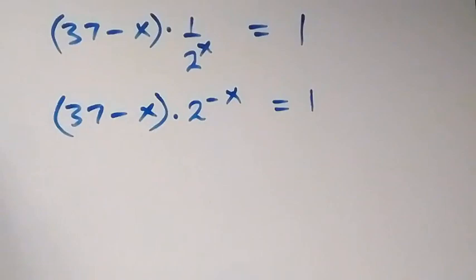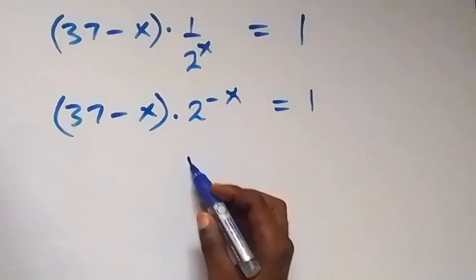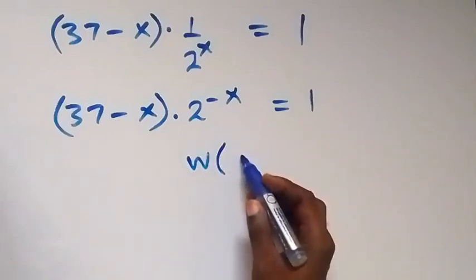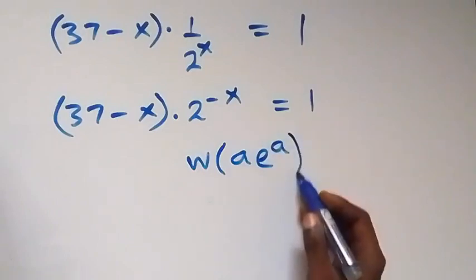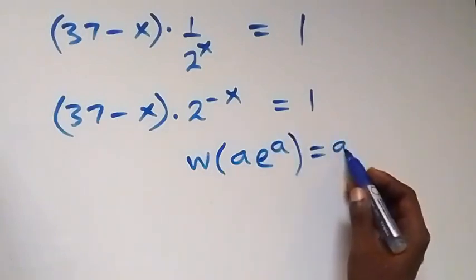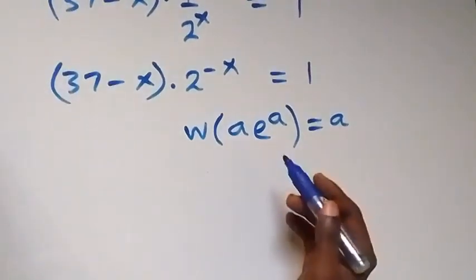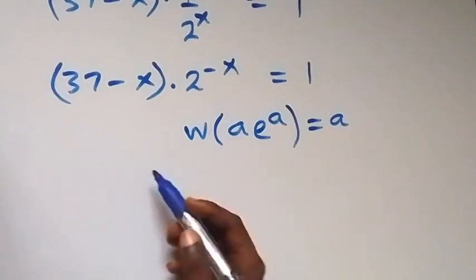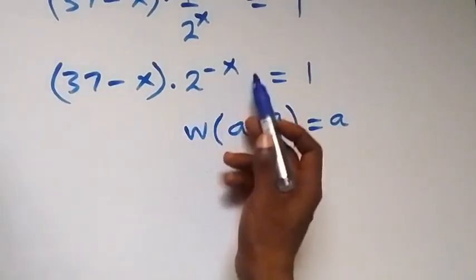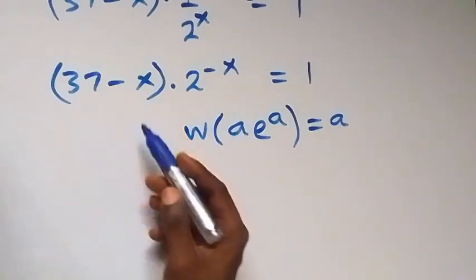We can write this again as 37 minus x multiplied by 2 raised to power minus x, which equals 1. We want to use the Lambert W function here. Recall that W of a times e^a equals a, meaning the base and power coefficient must match. Let's make the power equal to 37 minus x.